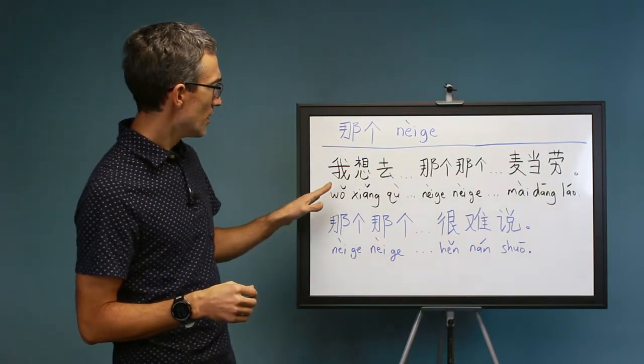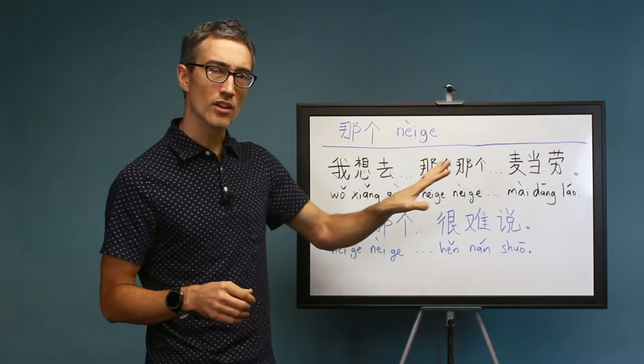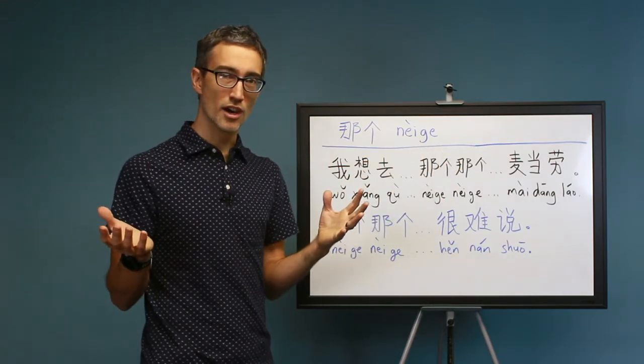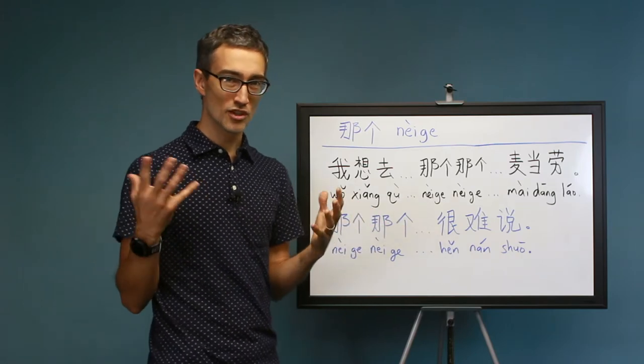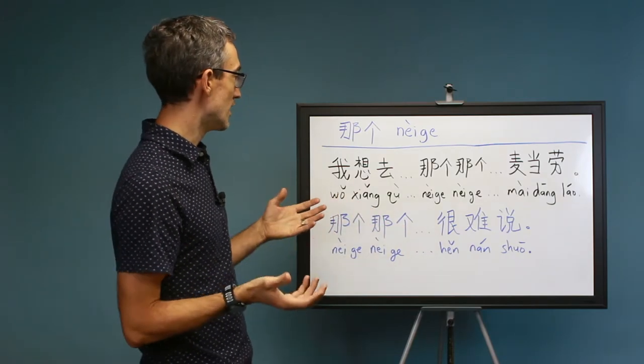Here are some examples. The nega can go anywhere in the sentence, it's just like the English word um. It can fill in anywhere as you're trying to pause or think of something.